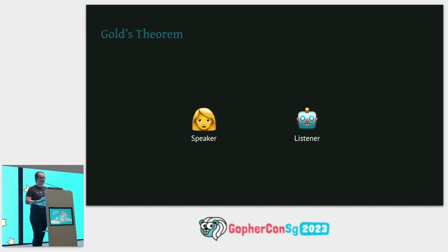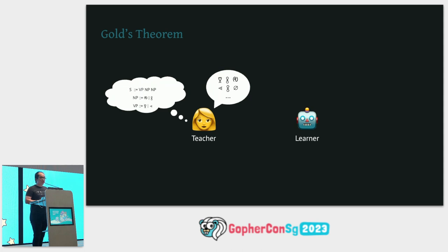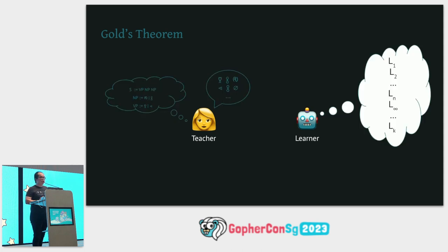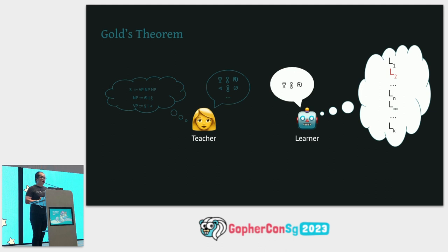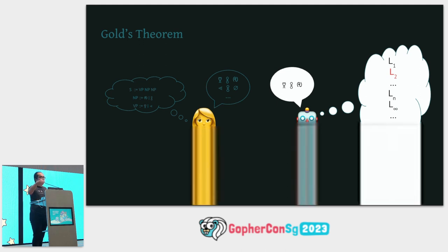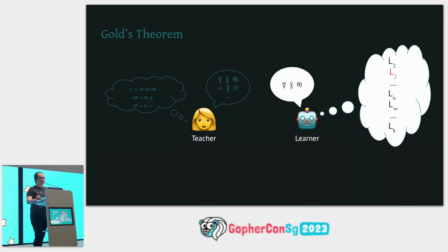We'll imagine we've got a speaker and a listener. The speaker uses grammar G to generate sentences of language L. The listener listens and, after some time, should be able to find G and construct sentences in language L. We say the listener has learned language L when the listener's able to do this — or, more simply, when they're able to identify what language is being spoken. This seems strange and for many years I thought it was a silly equation.